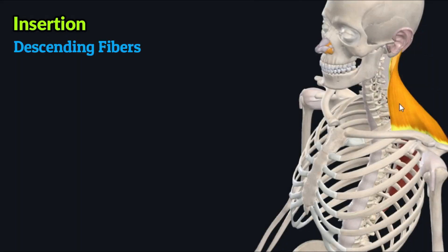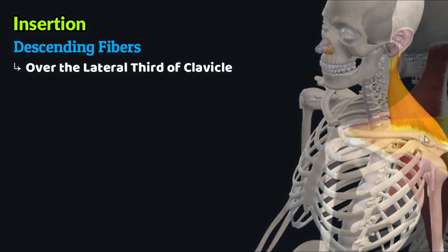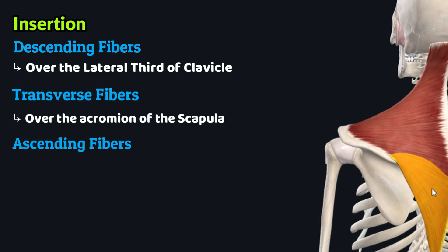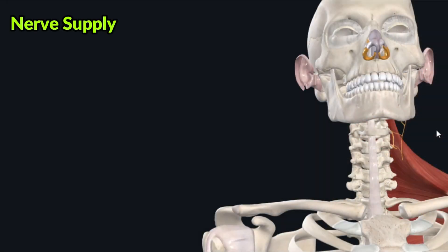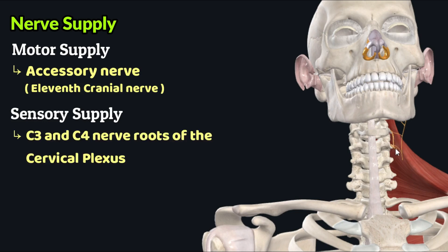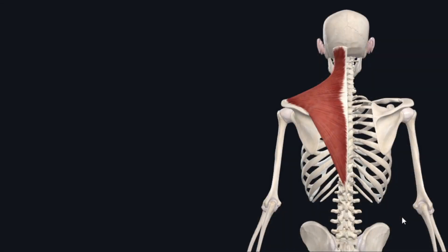The three groups of fibers insert over different areas on the clavicle and scapula. The descending or superior group inserts over the lateral third of the clavicle, the transverse or middle group inserts over the acromion of the scapula, while the ascending or inferior group inserts over the spine of the scapula. The motor nerve supply to the trapezius comes from the accessory nerve — the 11th cranial nerve — while the sensory supply comes from nerve roots C3 and C4 of the cervical plexus.